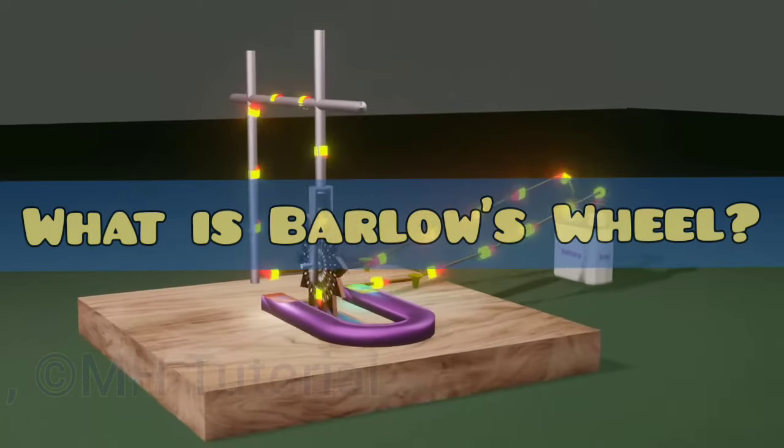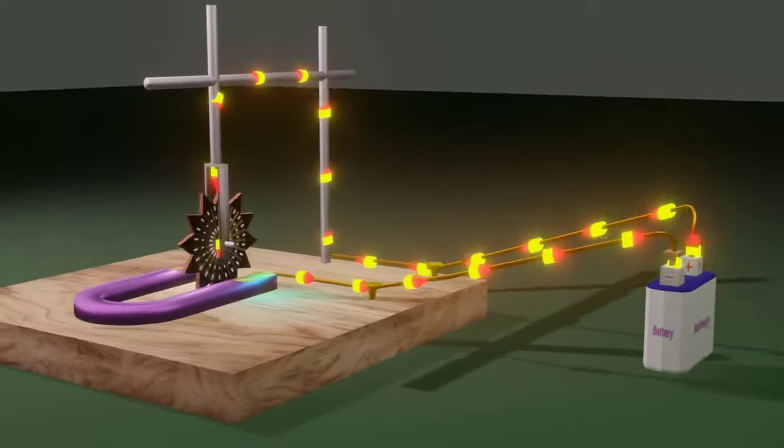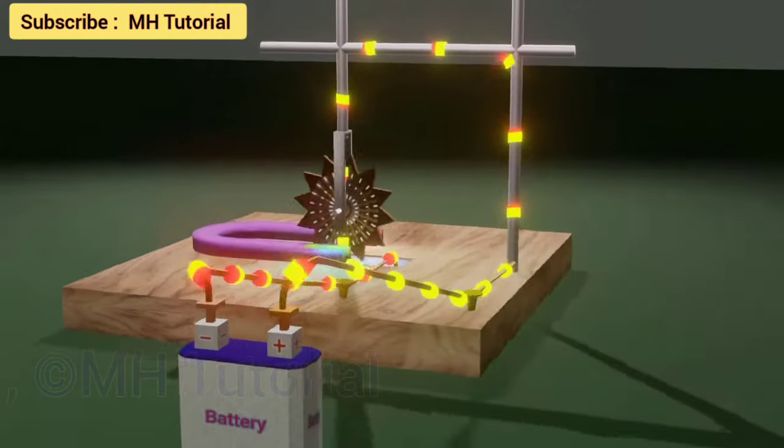What is Barlow's wheel? Barlow's wheel is a simple electrical instrument used in schools to demonstrate Fleming's left-hand rule in real time in three-dimensional space.